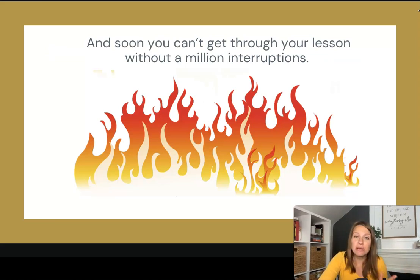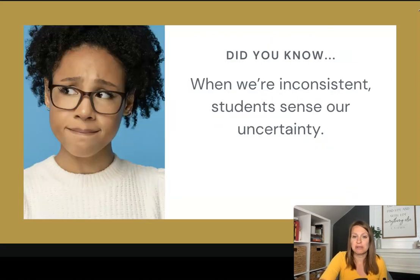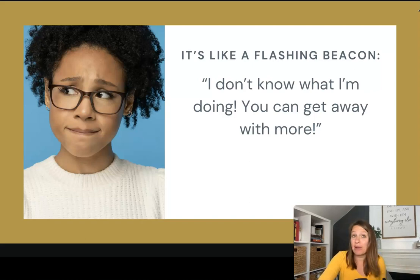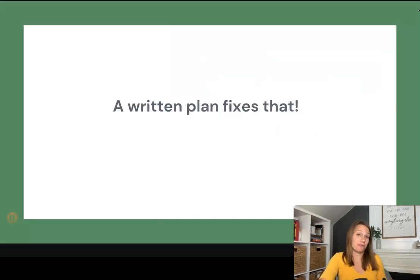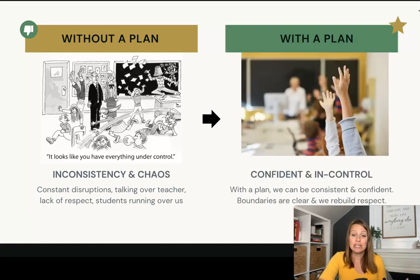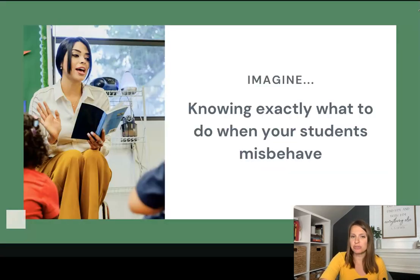I can't get through my lesson — there are a million interruptions. When we're inconsistent and don't hold the line clearly, problems grow. Students also sense our uncertainty. It's almost like a flashing beacon that says, I kind of don't know what I'm doing — you can get away with more, push the line even further. A written classroom management plan is what fixes that. It takes you from inconsistency and chaos to being confident, being in control, the boundaries being clear, rebuilding respect, and reducing disruptions.